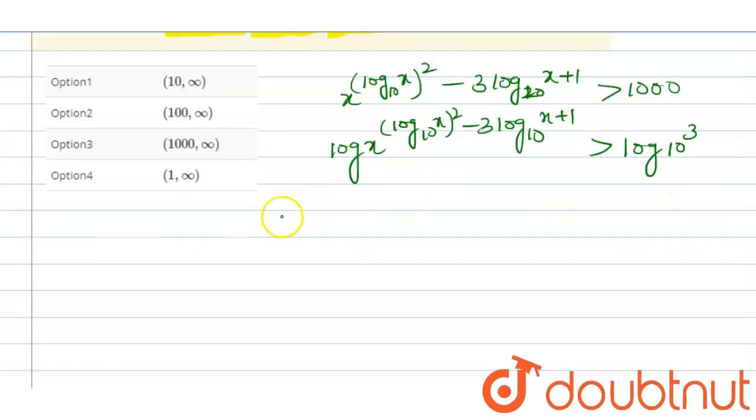Here we can see that ((log₁₀x)² - 3log₁₀x + 1) into log₁₀x...